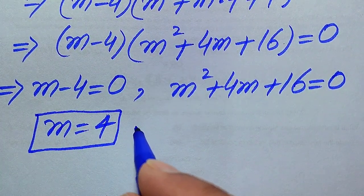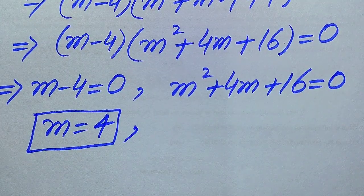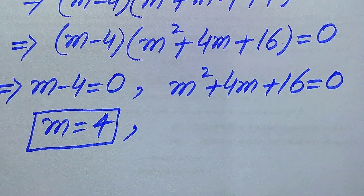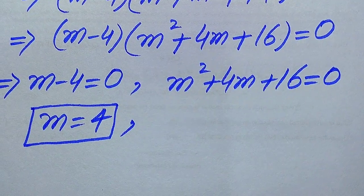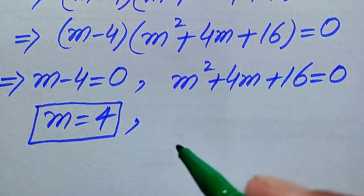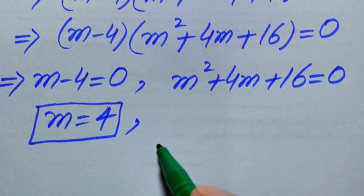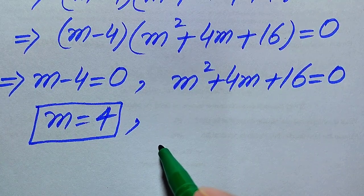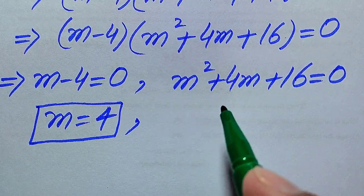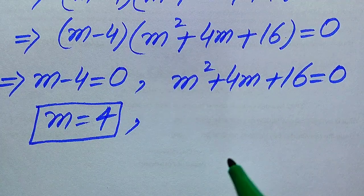To find the other roots, we need to solve the quadratic equation m squared plus 4m plus 16 equals 0. There are three methods: factorization, completing the square, and the quadratic formula. Here we use the quadratic formula.